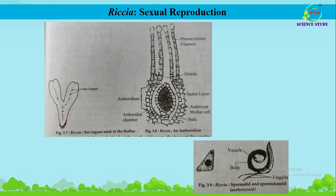Now we will study sexual reproduction in Riccia. Sexual reproduction in Riccia is oogamous. It takes place by formation of well-developed multicellular jacketed sex organs. In most species of Riccia, the male and female sex organs are developed on the same thallus, and so those species are considered as monoecious or homothallic. Two types of sex organs are produced: the male sex organ is known as antheridium and the female sex organ is known as archegonium.